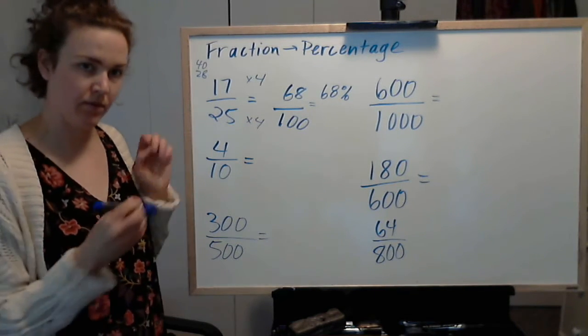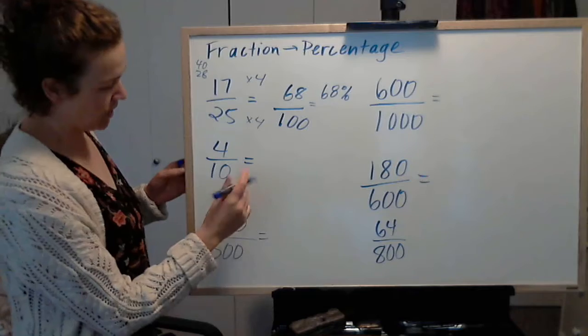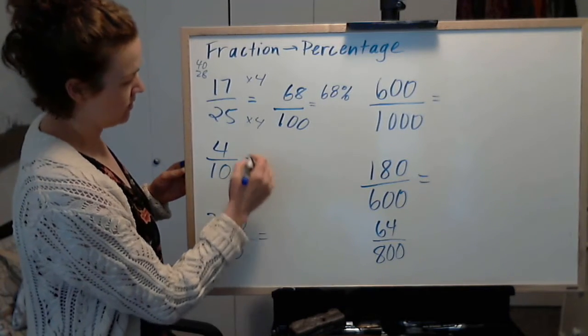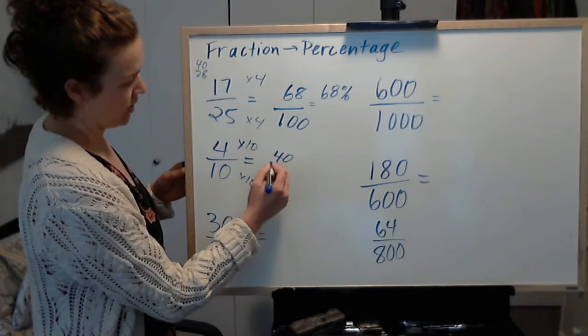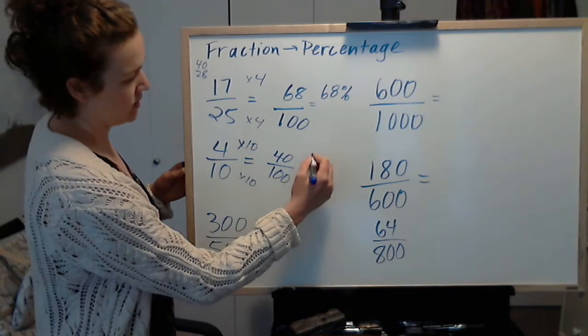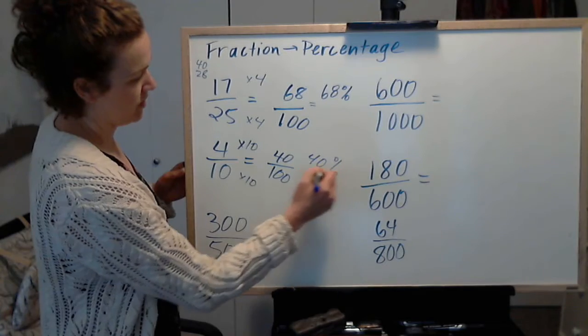4 out of 10. So you get 10 to 100 multiplied by 10, so we do the same thing on the top. And we get 40 out of 100, which is 40%.